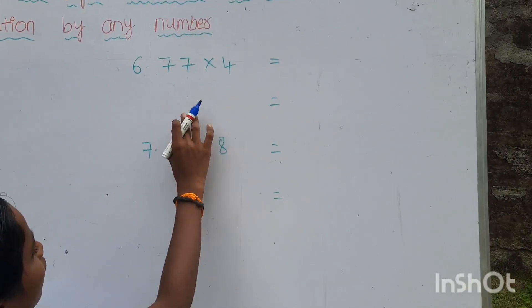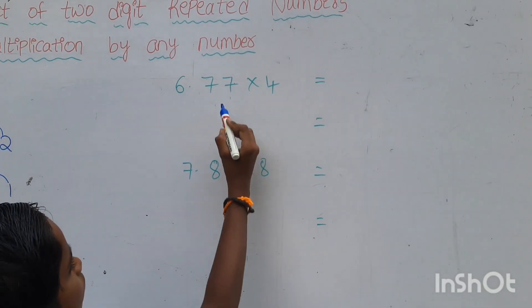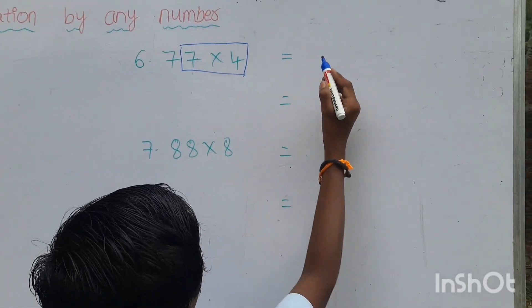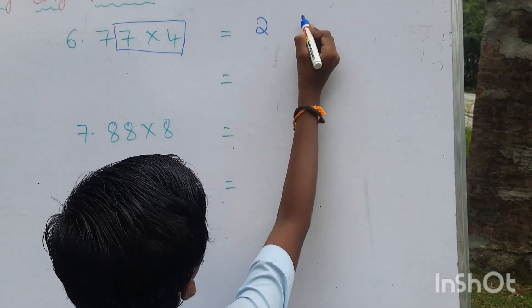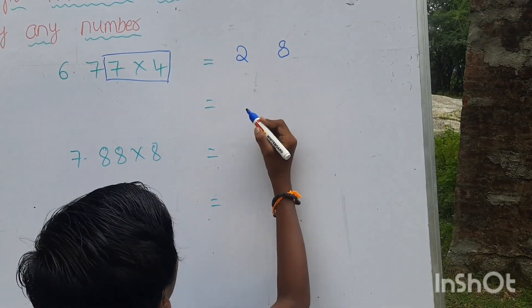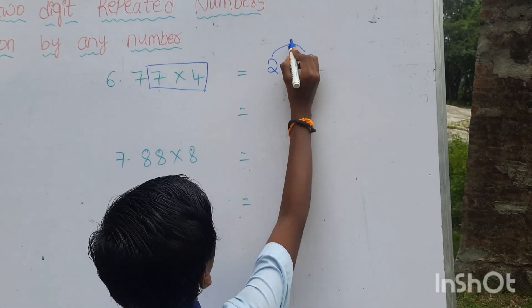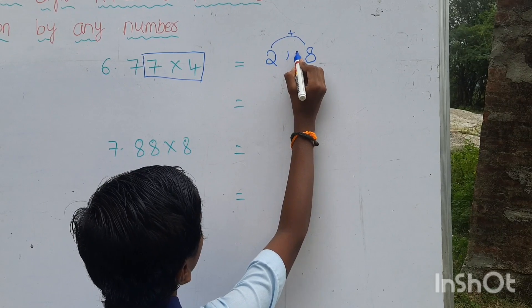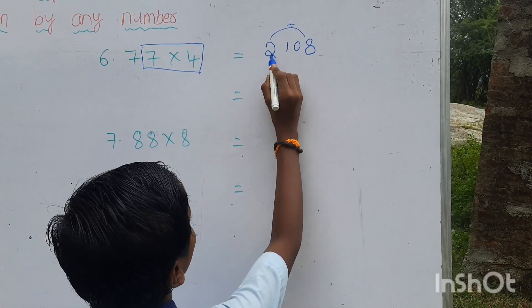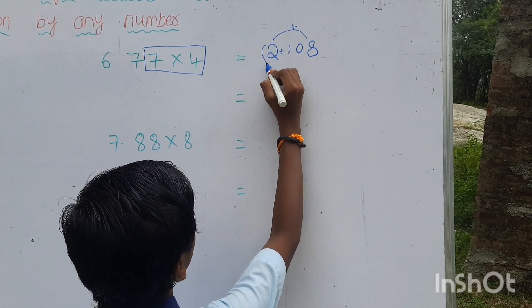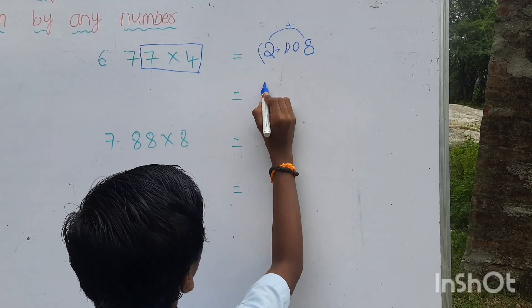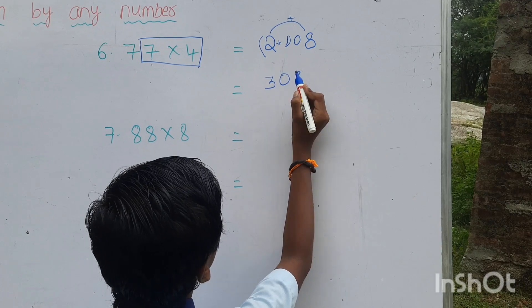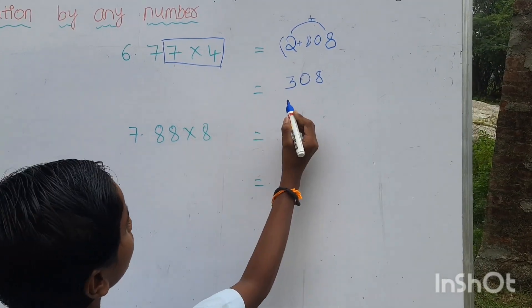Next one, 77 into 4. We want to multiply 7 and 4. 7 4s are 28. We want to add 2 and 8. 2 plus 8 equals to 10. Again, we want to add 2 and 1. 2 plus 1 equals to 3. 77 4s are 308.